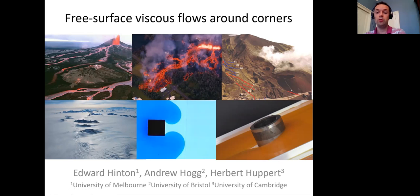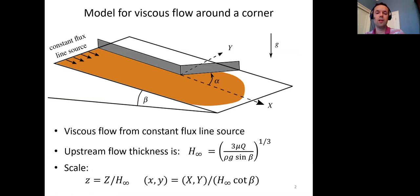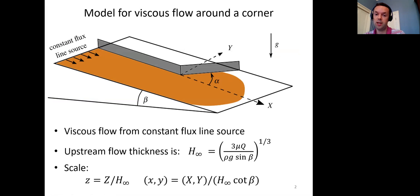This was work I did in the UK with Andrew Hogg and Herbert Hopper. We start with a simple model for viscous flow going around a corner — very low Reynolds number — with a constant flux line source that's semi-infinite in one direction. Without obstructions, this leads to a constant thickness, constant velocity sheet flow, with thickness h∞ given by an expression where q is the flux strength and μ is the viscosity. We then allow the semi-infinite channel wall to open at the origin by angle α.